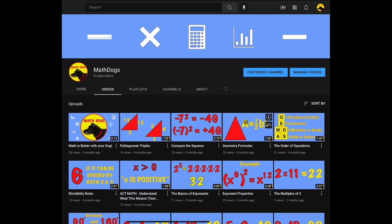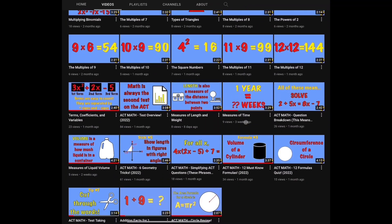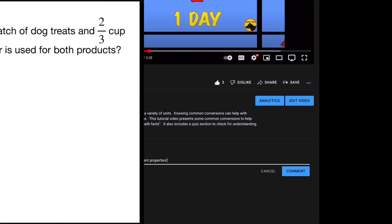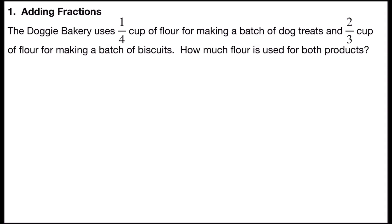Welcome back to Math Dogs. If you're new to the channel, please comment, like, and subscribe. If you have any questions, please comment down below. Problem number one is adding fractions. It says the Doggie Bakery uses 1/4 cup of